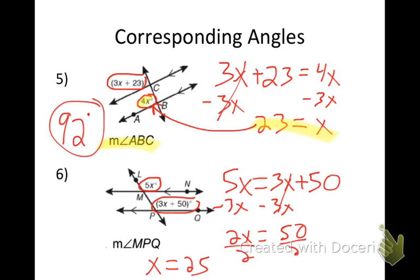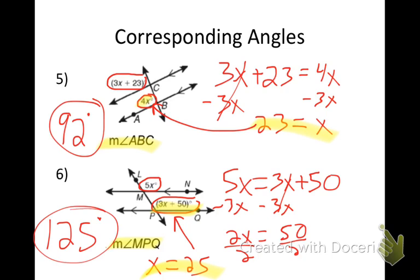I want to find angle MPQ. So I take 25 and plug it in: 3 times 25 plus 50 — the angle comes out to be 125 degrees. That's the answer.